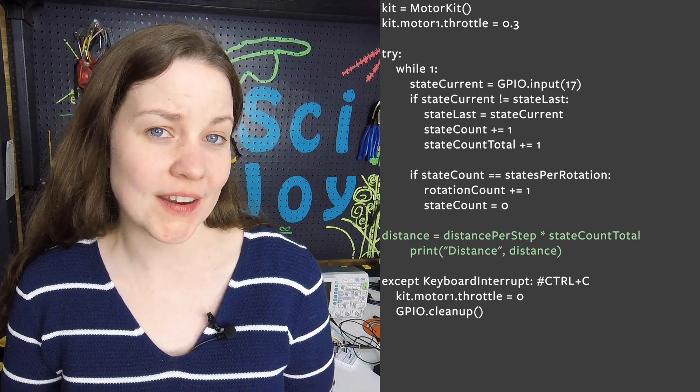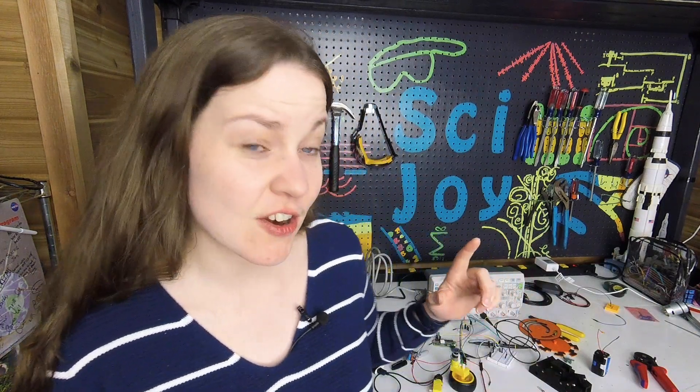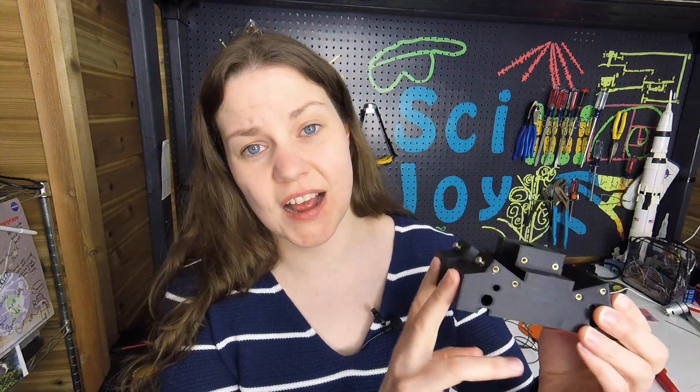If you want to learn more about encoders we have a few more videos where we talk about quadrature encoders — which tell you the direction you're rotating — and absolute encoders that tell you a unique position of your motor's rotation. If you have any questions or comments you can leave them down below. In our next video we're going to put the motors and two encoders onto a 3D-printed chassis and start wiring everything up. Thank you so much for learning with me today and I'll see you next time.